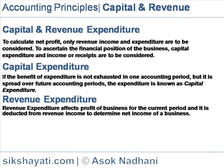Expenditure of Right or Benefit of Asset: Expenditure incurred for acquiring a benefit or right of an enduring nature. For example, goodwill, copyright, trademark, patent, etc.